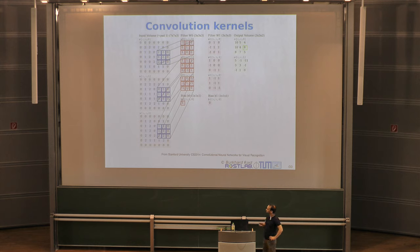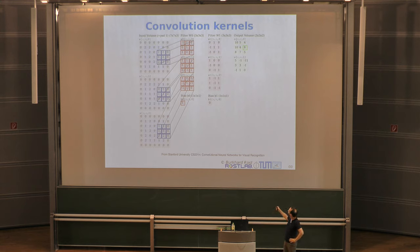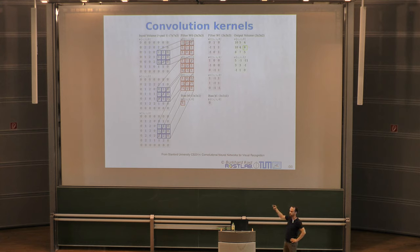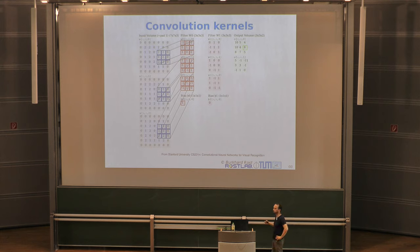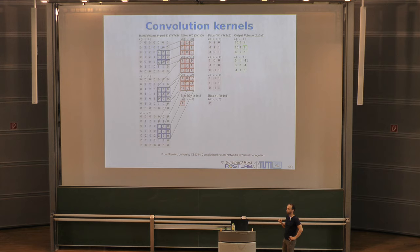While a convolution kernel stretches the full depth of the input volume, it produces a single output channel. The number of output channels equals the number of kernels used — sometimes 64 or 128, depending on the problem. The more kernels you use, the more features you can extract, but you add more free parameters. It's a balance to strike when developing the architecture.